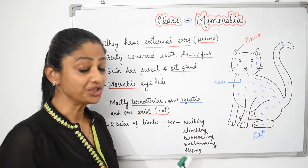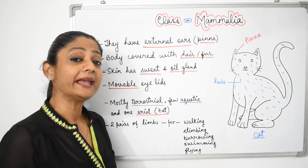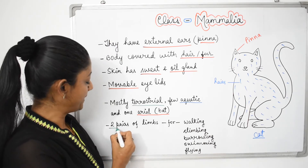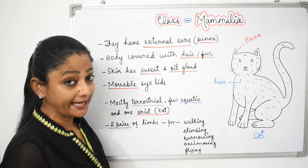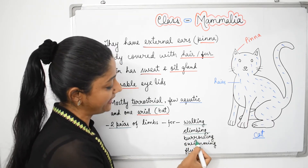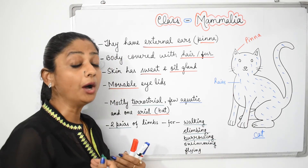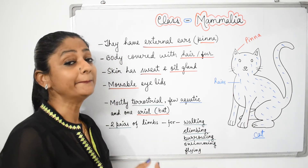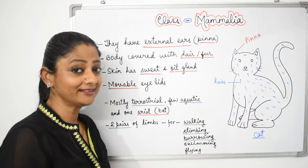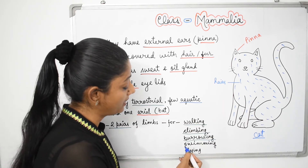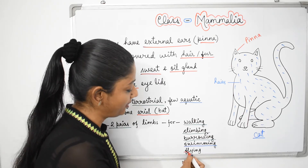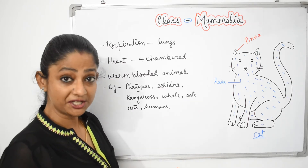Most mammals are terrestrial, meaning they live on land, but some are aquatic — they live in water, for example, the whale. Only one mammal is aerial, meaning it flies in the air, and that is the bat. Mammals have two pairs of limbs, which help in walking, climbing, and burrowing. We walk, monkeys climb, rabbits and rats burrow.